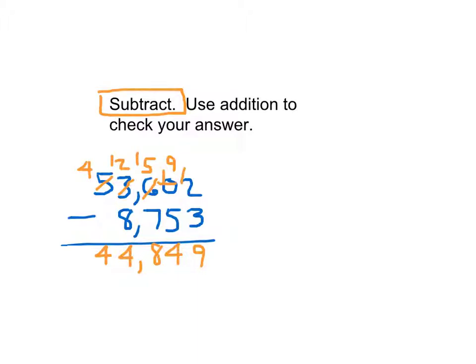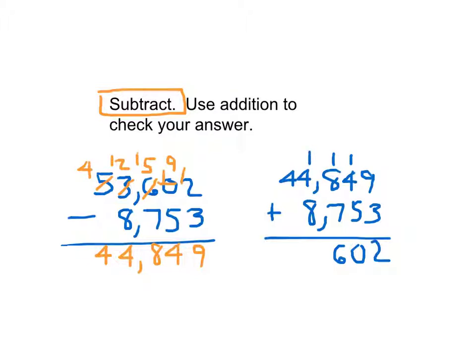We've done this part where we use the subtraction. It says use addition to check our answer. So when we're checking our answer, we'll just take 44,849. And then we will add. We'll add that back to 8,753. And ideally, if our answer is correct, we will get 53,602. We do have to go step by step and actually add those numbers together. We just cannot write 53,602. 9 plus 3 is 12. 2 regroup the 1. 1 plus 4 is 5. Plus 5 is 10. 0 regroup the 1. 1 plus 8 is 9. Plus 7 is 16. 1 plus 4 is 5. Plus 8 is 13. And 1 plus 4 is 5. 53,602. Matches with that original problem. I've used addition to check my answer.